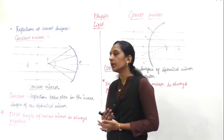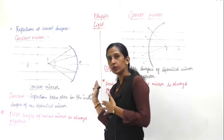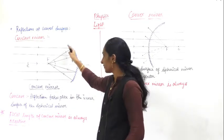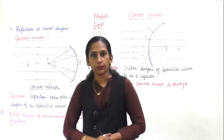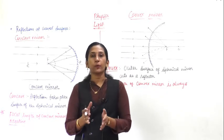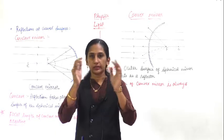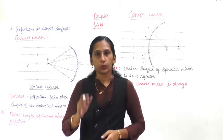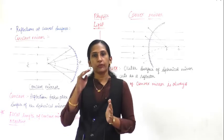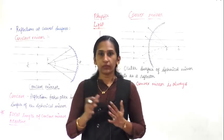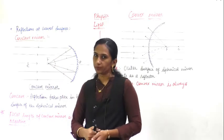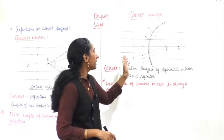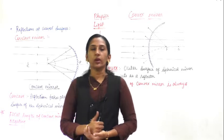In the concave mirror, we are going to study how light rays fall on it and how it reflects - reflections at a curved surface. Concave and convex mirrors are types of spherical mirrors. Spherical means sphere-shaped, and when you cut a sphere it produces two sections. When the inner part of the surface reflects, it is called a concave mirror, and if the outer part reflects, it is called a convex mirror.